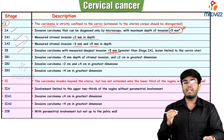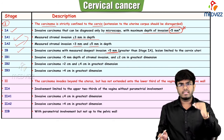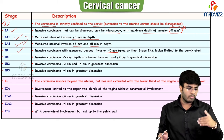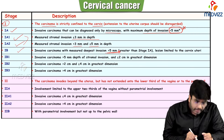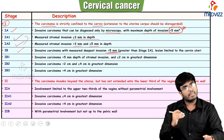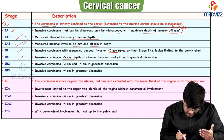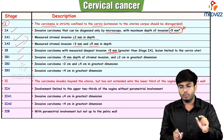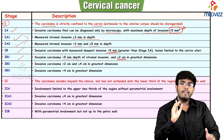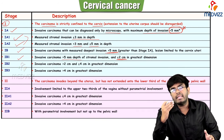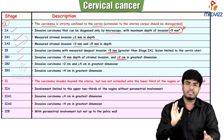Stage 1b means depth of invasion is greater than 5 millimeters, but cancer is still localized to the cervix. It is not going to vagina, parametrium, pelvic sidewall, or causing distant metastasis. Stage 1b is divided into 1b1, 1b2, and 1b3. In 1b1, stromal invasion is greater than 5 mm but tumor size is less than 2 centimeters.